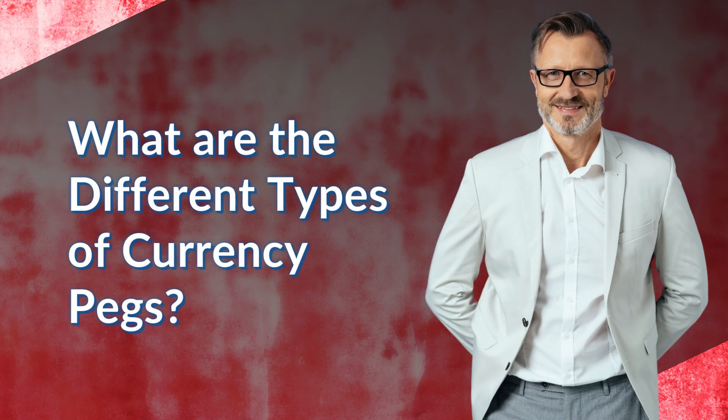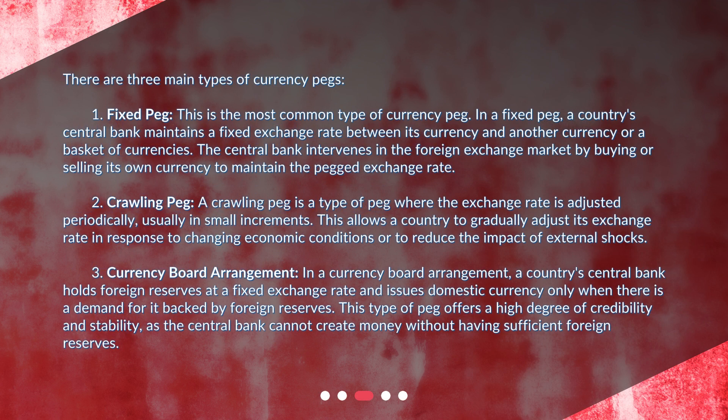There are three main types of currency pegs. First, the fixed peg. This is the most common type of currency peg. In a fixed peg, a country's central bank maintains a fixed exchange rate between its currency and another currency or a basket of currencies. The central bank intervenes in the foreign exchange market by buying or selling its own currency to maintain the pegged exchange rate.